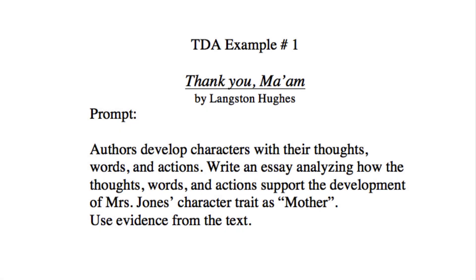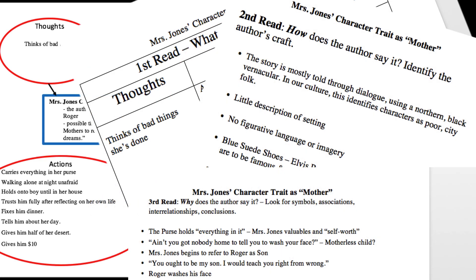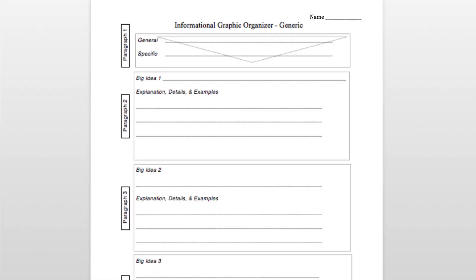Now go back and re-read the prompt: Write an essay analyzing how the thoughts, words, and actions support the development of Mrs. Jones' character trait as mother. The student will not use all of the material gathered during the close reads. The Common Core expects students to choose the strongest elements and explain their significance and impact on the author's message in an essay structure. Students will use an informational essay graphic organizer to choose the elements to be used in the essay.